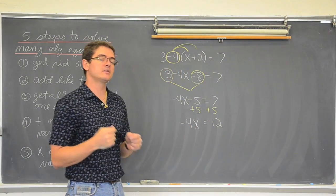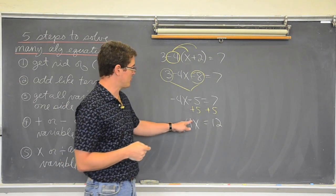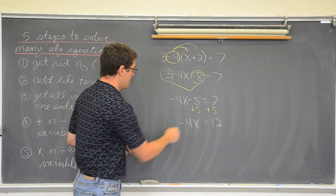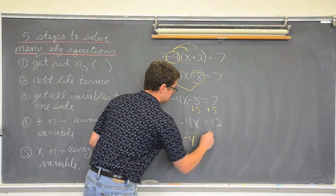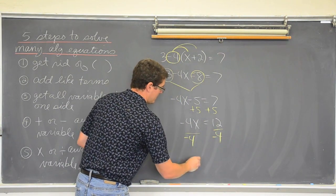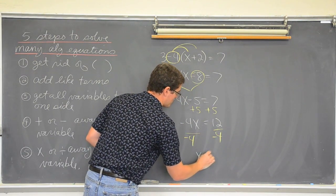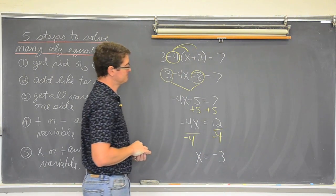Now with the x we have a negative 4. It is attached with multiplication. So we are going to undo that multiplication with division and get x is equal to negative 3. Done.